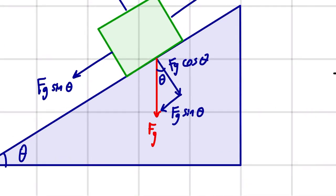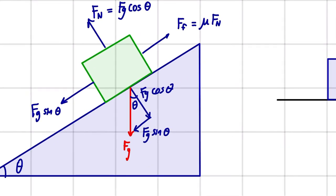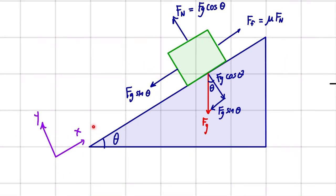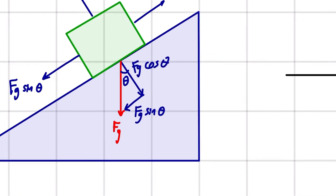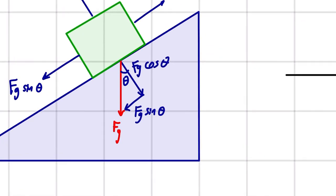And gravity always goes down, but in this case, to make this easier for us to work with, we want to split the gravity into its x component and its y component. So we've kind of redefined the x and the y axis over here.